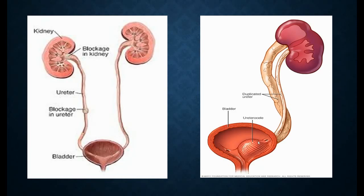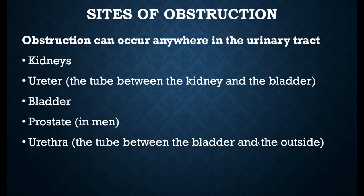Here you can see on one side there is a normal kidney, and on the left side you can see a kidney having blockage. The blockage has been shown in the kidney as well as in the ureter and in the bladder. On the right side, you can see the duplicate ureter in a single kidney, which can cause reflux of the urine.